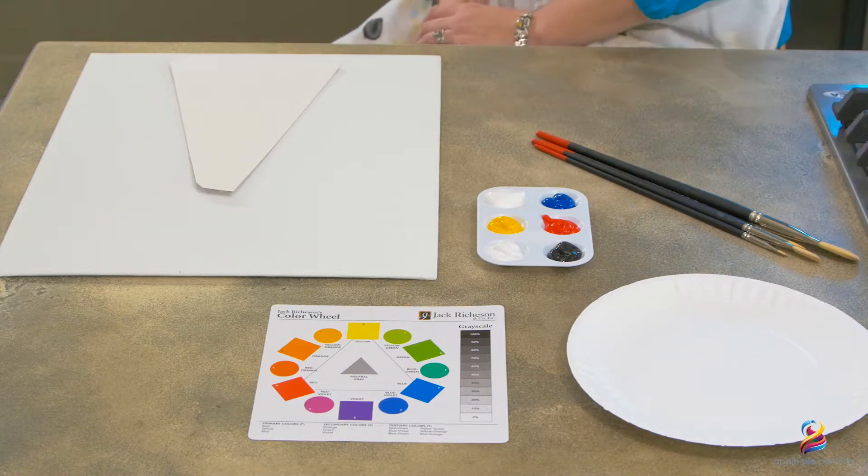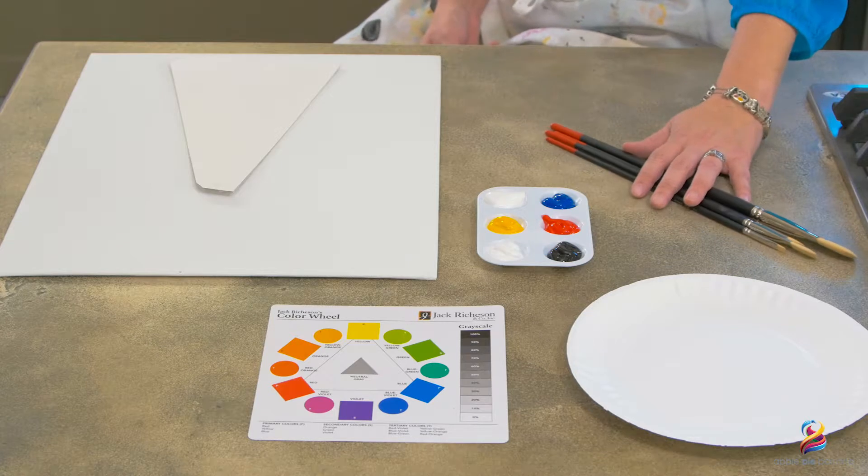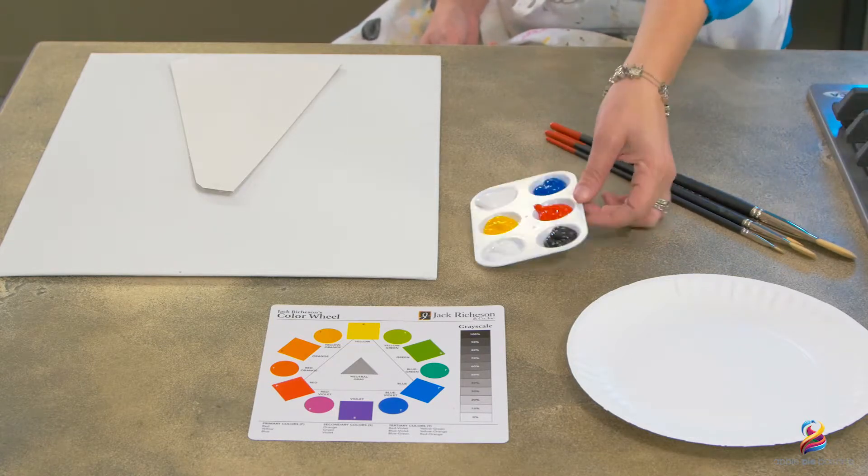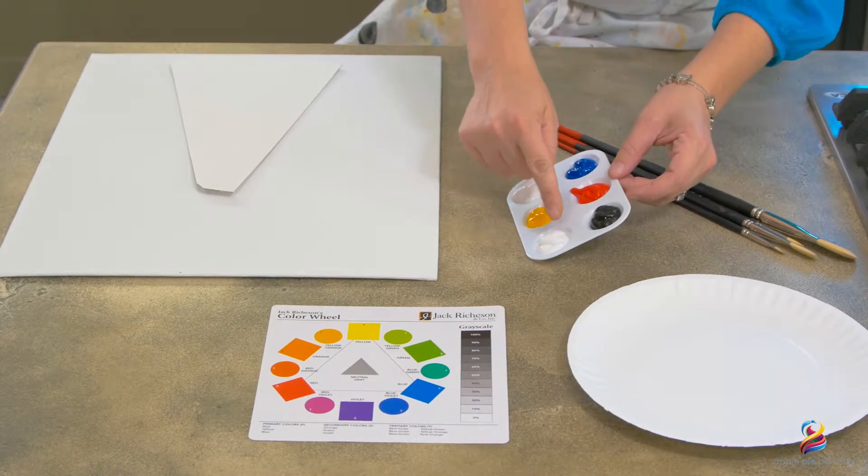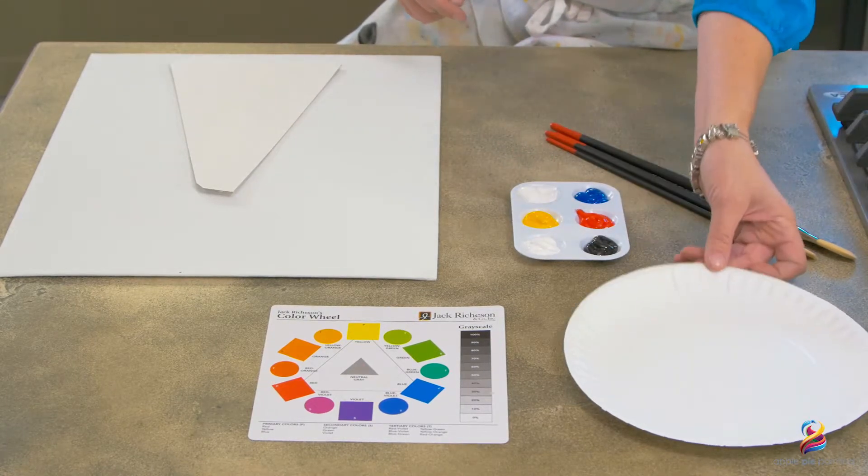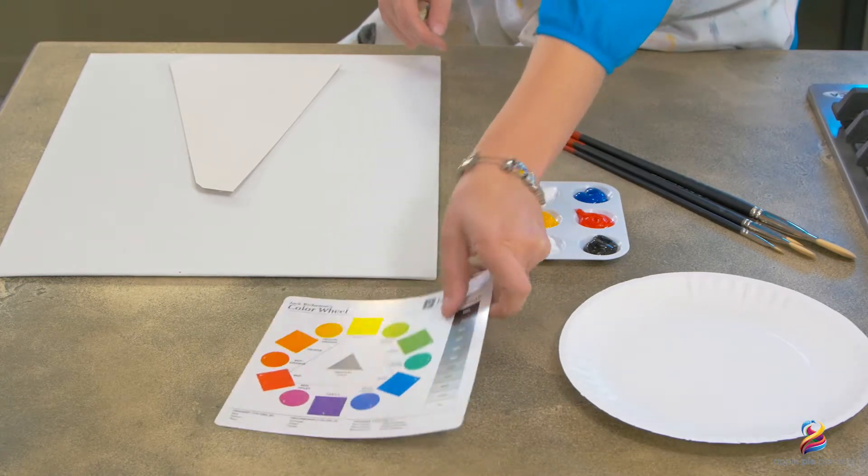All right, now let's quickly go over what you should expect with your painting kit. You'll have brushes, your paint palette with basic paint colors of blue, red, yellow, white, and black, a color mixing plate, and a color wheel to help with color mixing.